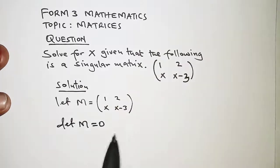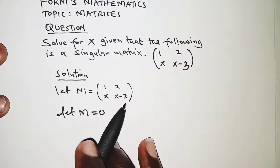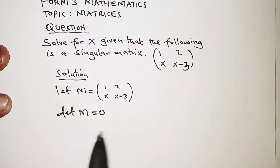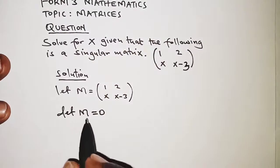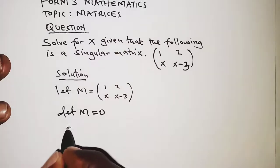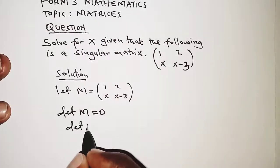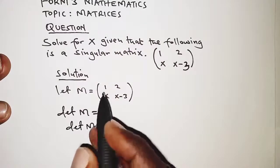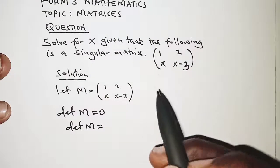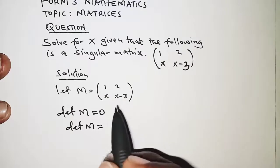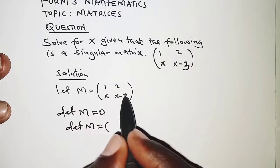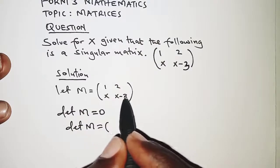That will help us get the value of X. So determinant of M, which we'd already defined as the matrix given, is the product of the elements of the leading diagonal, which we have 1 and X minus 3, that is 1 by X minus 3.